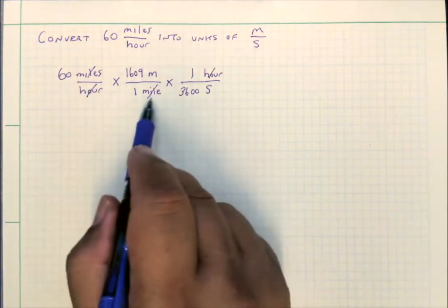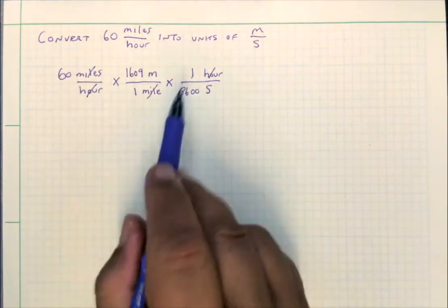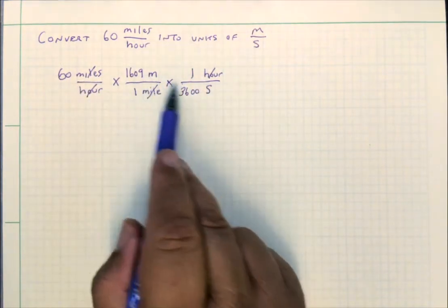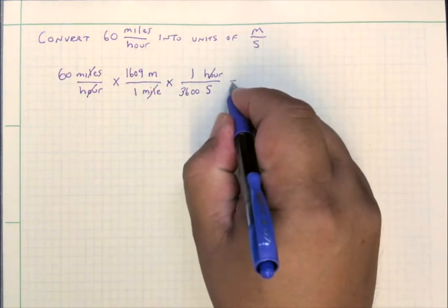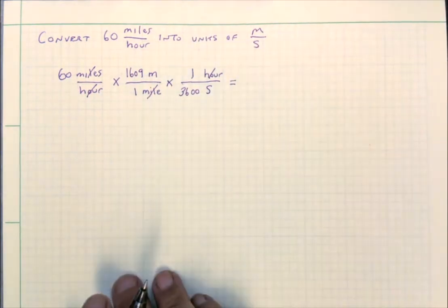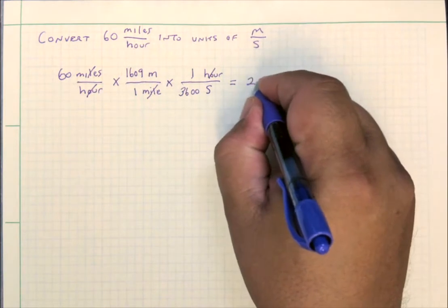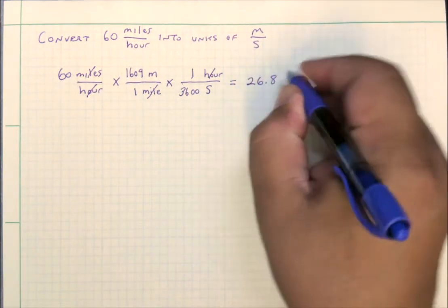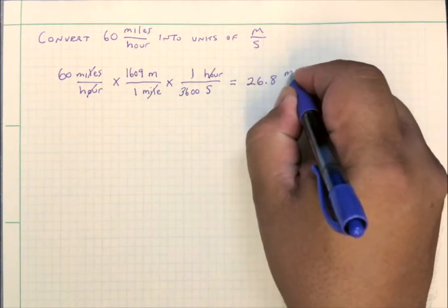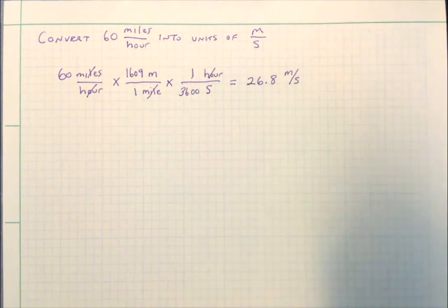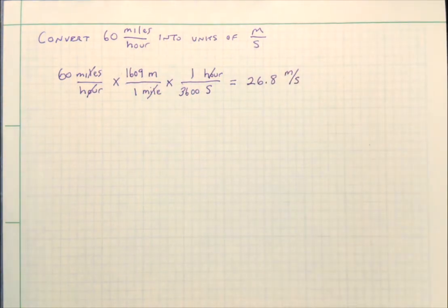The units that we do not want have canceled, and we have replaced them with the units we want. We do the math, and that turns out to be 26.8 meters per second. So we've converted a velocity of 60 miles per hour into 26.8 meters per second.